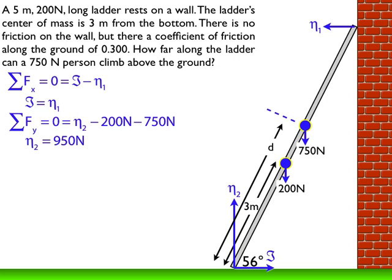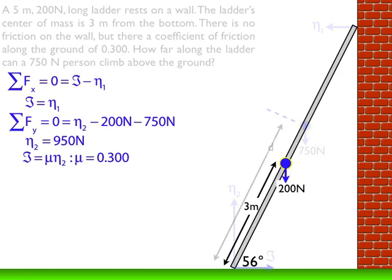Friction is mu times eta, and mu equals 0.3, so I can establish another equation. Notice that friction involves eta2 — not eta1 — because eta2 is on the ground where the friction is located. This means eta1 equals mu times eta2, because I can set my two friction expressions equal to each other.